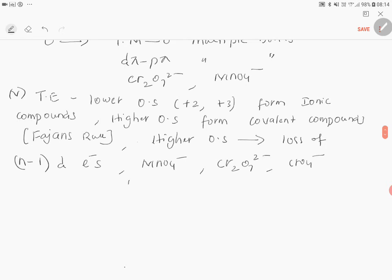Bonds formed between manganese-oxygen and chromium-oxygen are all covalent because oxidation state is higher in these compounds. This is the conclusion.